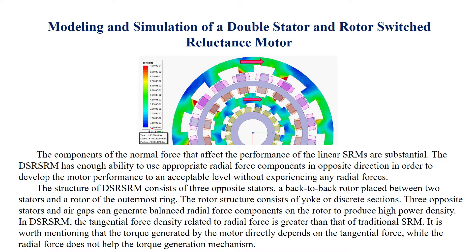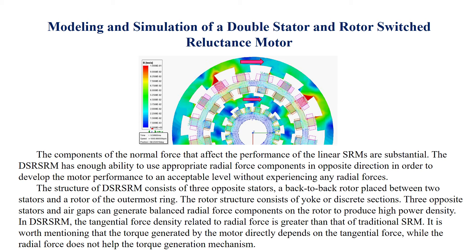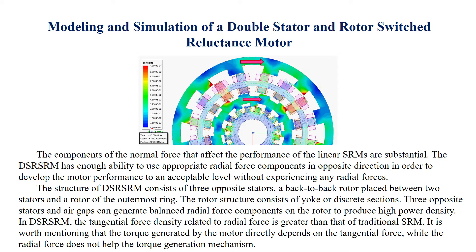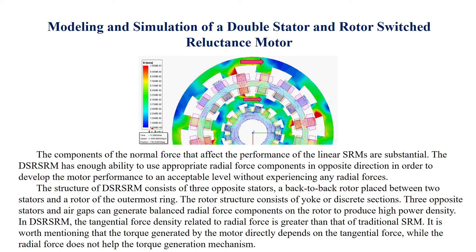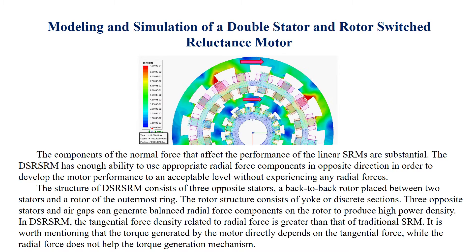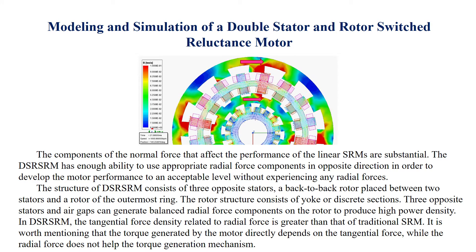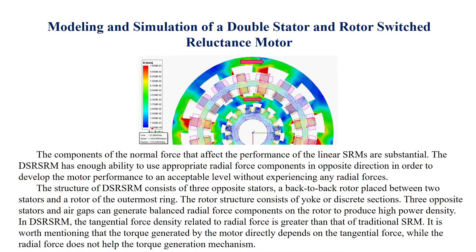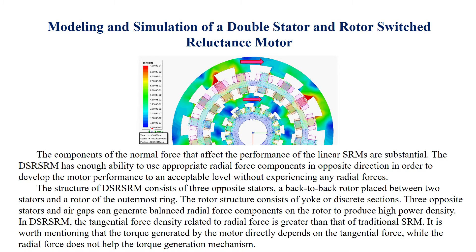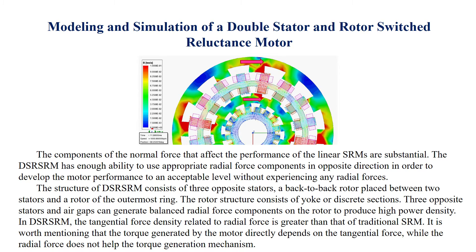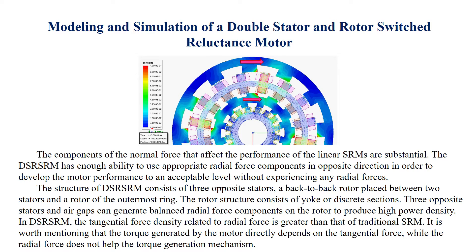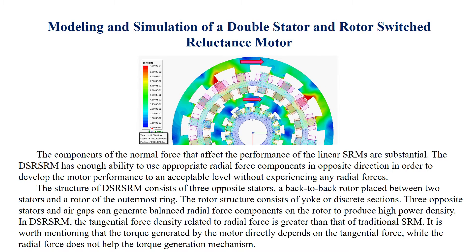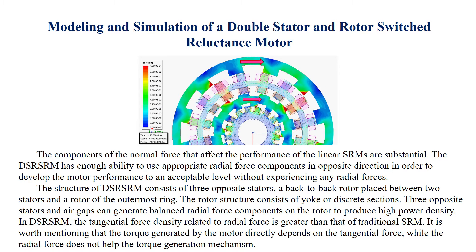In DS-SRM, the tangential force density related to radial force is greater than that of traditional SRM. It is worth mentioning that the torque generated by the motor directly depends on the tangential force, while the radial force does not help the torque generation mechanism.